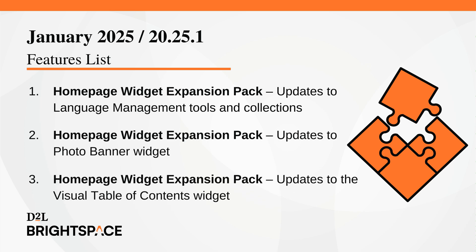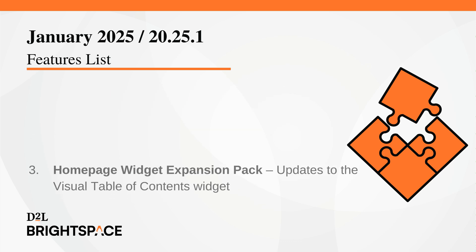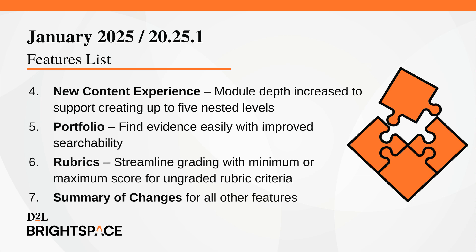This month we're highlighting the following features: the Homepage Widget Expansion Pack has updates to language management tools and collections, the Photo Banner widget, and the Visual Table of Contents widget. Module depth increased to support creating up to five nested levels with new content experience. Find evidence easily with improved searchability in portfolio. In rubrics, streamline grading with minimum or maximum score for ungraded rubric criteria. And finally, a summary of all the other features this month.